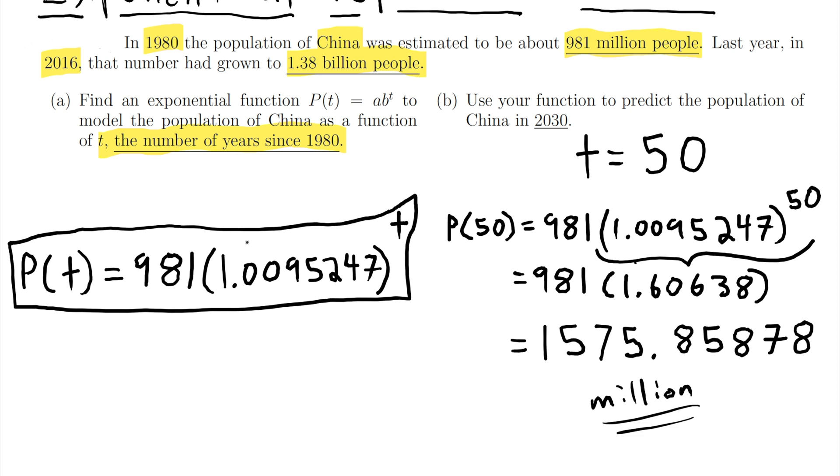As a quick overview what did we do? We remembered that the a in this exponential function is always the starting value and then the b is what's sometimes called the growth factor and we plugged in these two values into our equation to solve for b. And then once we had our equation then we can use it to make predictions to figure out what we expect will happen for the population of China.